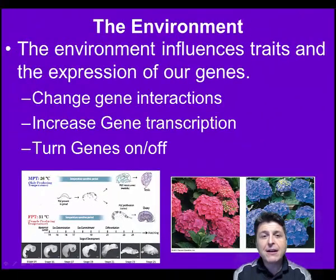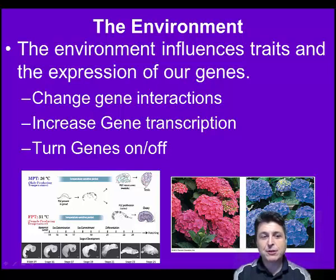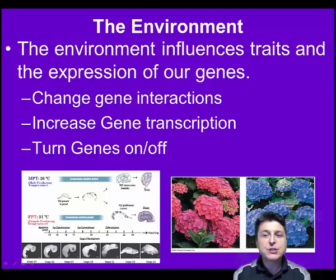The environment is able to affect genetic expression through a myriad of different ways. One way the environment might influence our genes is through changing gene interactions. Gene-gene interactions occur when some environmental cue, like a pollutant, doesn't necessarily change our DNA sequence, but rather causes a chain reaction that affects the functioning of one gene, which will then affect the functioning of another gene.